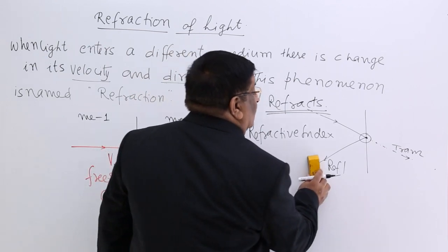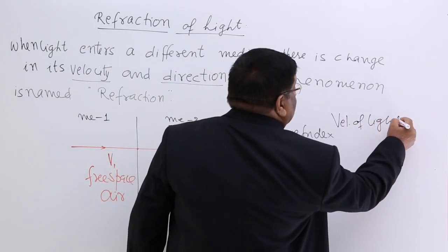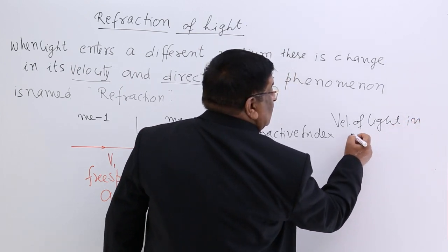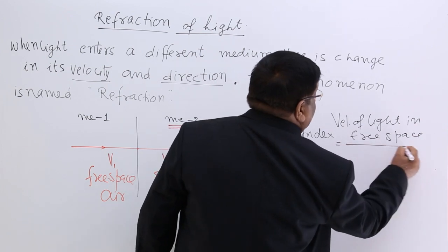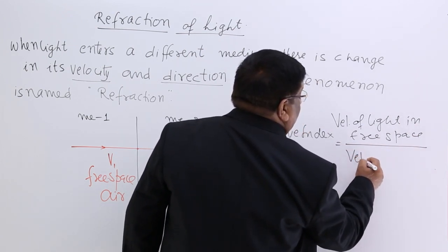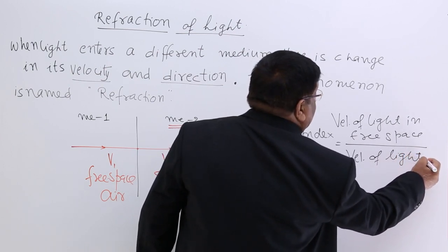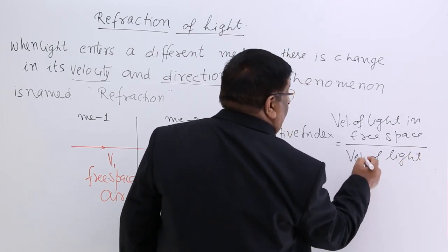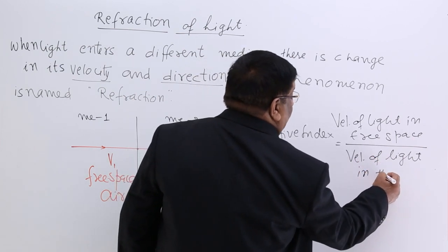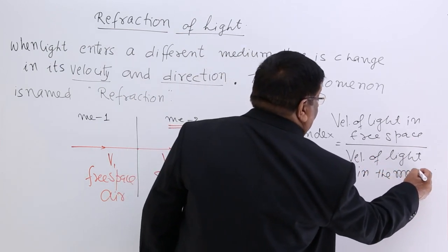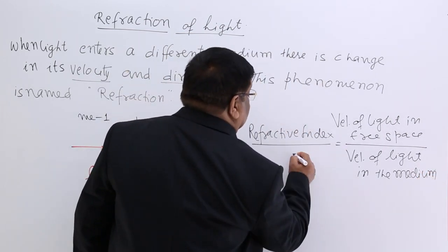So here we get a quantity called refractive index. And how do we measure the refractive index? It is by velocities. Velocity of light in free space divided by velocity of light in the medium.